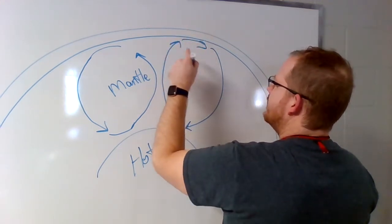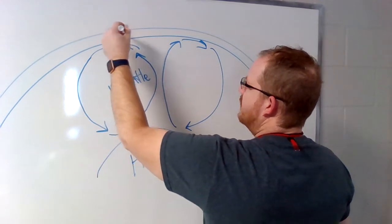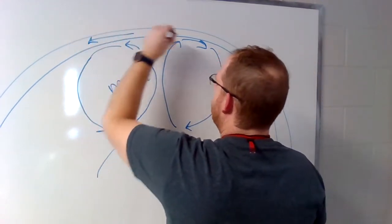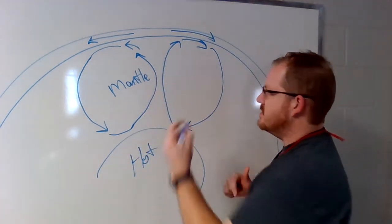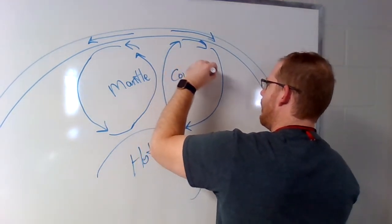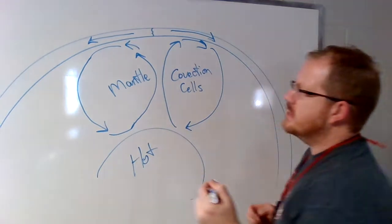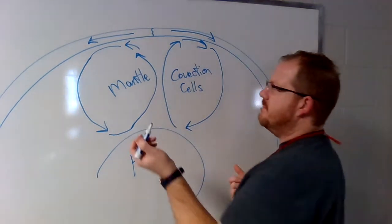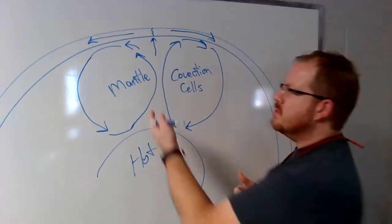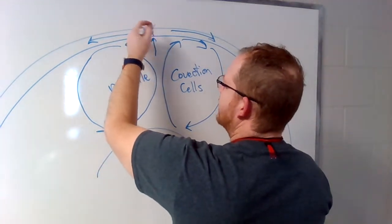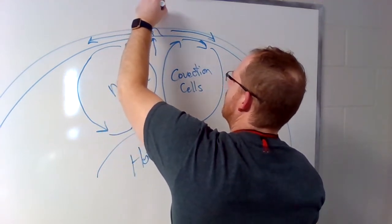At the top of these convection cells, one goes to the right and one to the left, so the plates also want to go left and right, moving apart from each other based on what's happening in the convection cells. The crust in the middle starts to split apart. What's available to fill this crack in the earth's crust? Magma from the mantle. This molten material comes up into the crack, fills it, and creates your mid-ocean ridge.